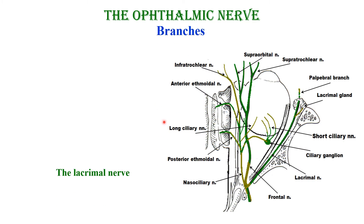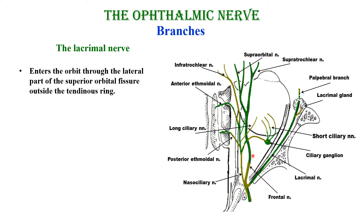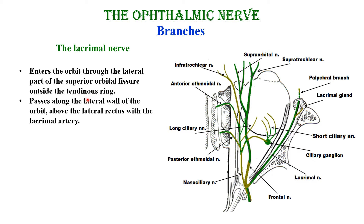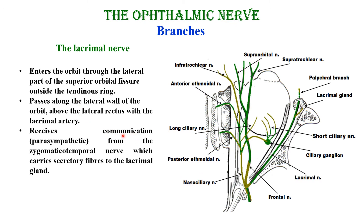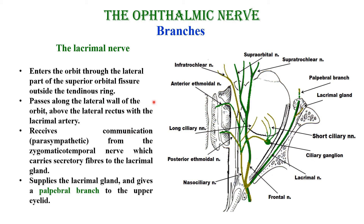The lacrimal nerve enters the orbit through the lateral part of the superior orbital fissure outside the tendinous ring, then passes along the lateral wall of the orbit above the lateral rectus near the lacrimal gland. It receives parasympathetic communication — secretory fibers to the lacrimal gland — from the zygomaticotemporal nerve. It supplies the lacrimal gland with general sensation and gives a palpebral branch to the upper eyelid.